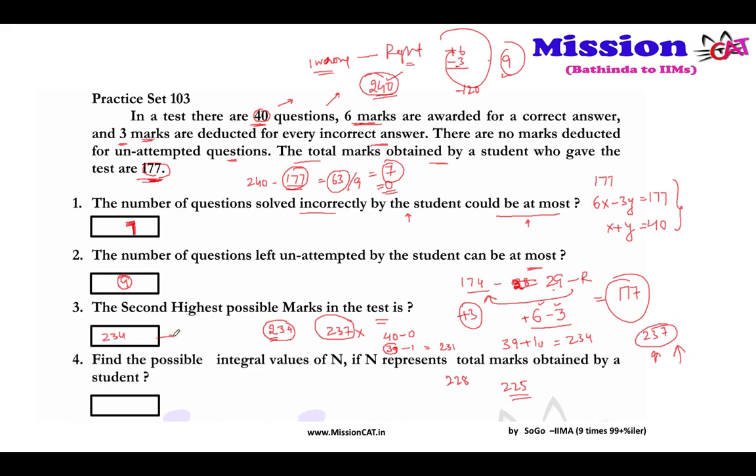This was fairly easy question but if this question comes with option 'which of the following is not a possible score,' then you can see it. 234 is possible, 231 is possible, 237 is not possible and the maximum possible score is 234. Second highest possible score is 234, obviously 240 is the highest possible score. Now minimum possible score minus 120, it is not 0.